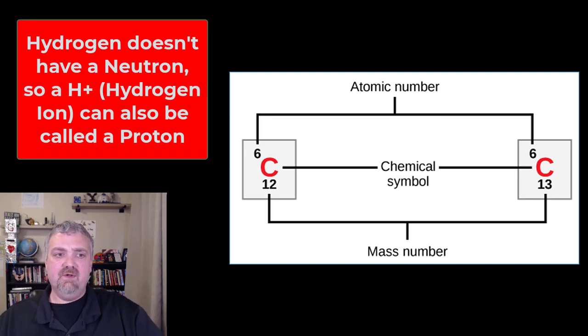All right. I'll just give you a couple more examples. You don't see them on the screen here, but hydrogen is unique because hydrogen is the only element that doesn't have a neutron. So hydrogen is made of a proton and electron. That's why if you remove an electron from hydrogen, it's now called a hydrogen ion, but it also can just be called a proton.